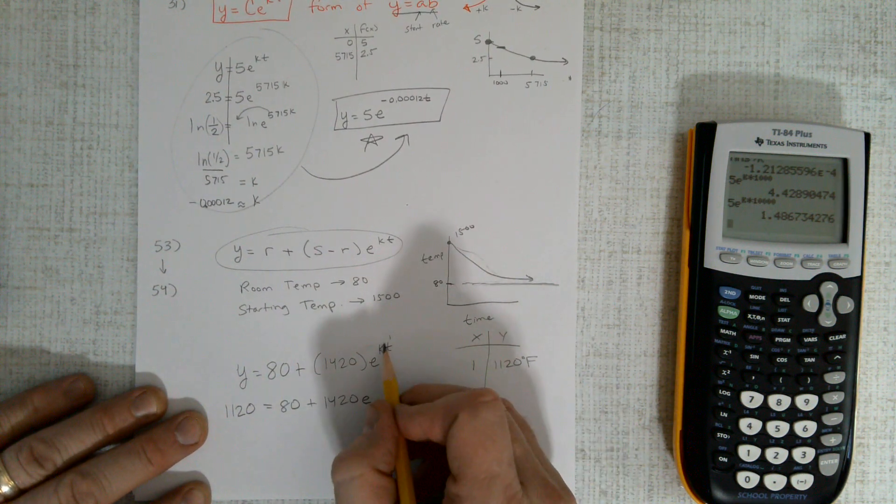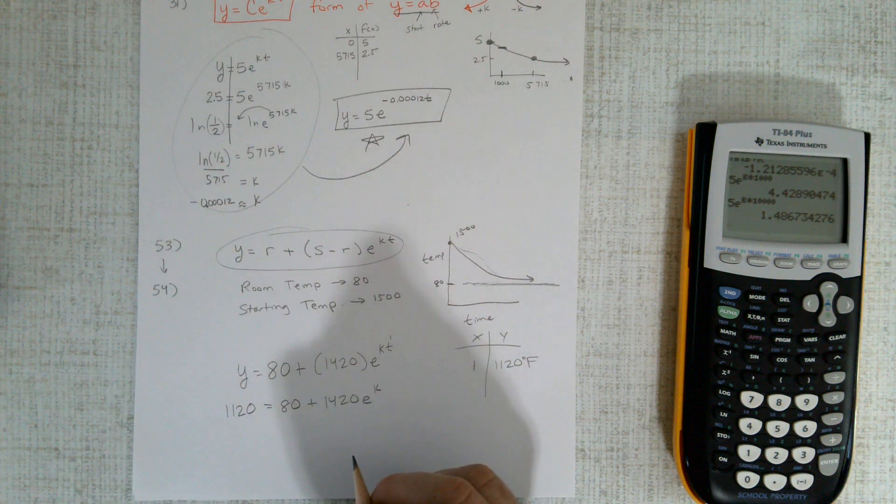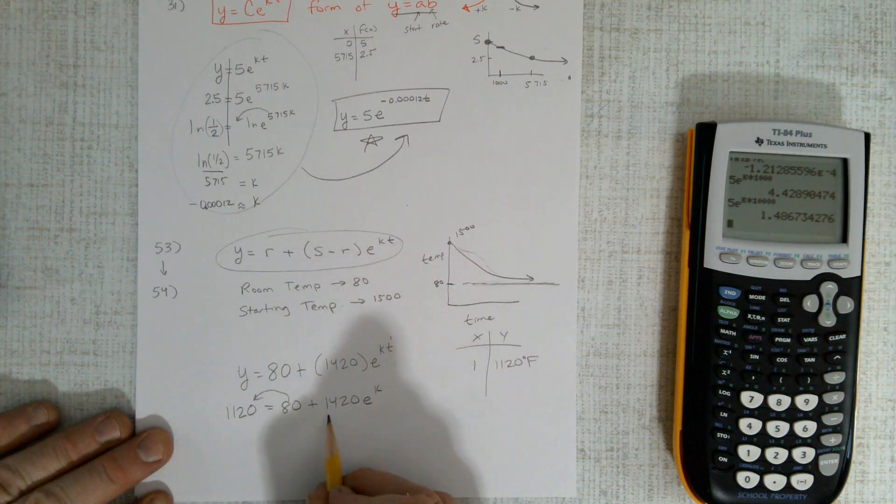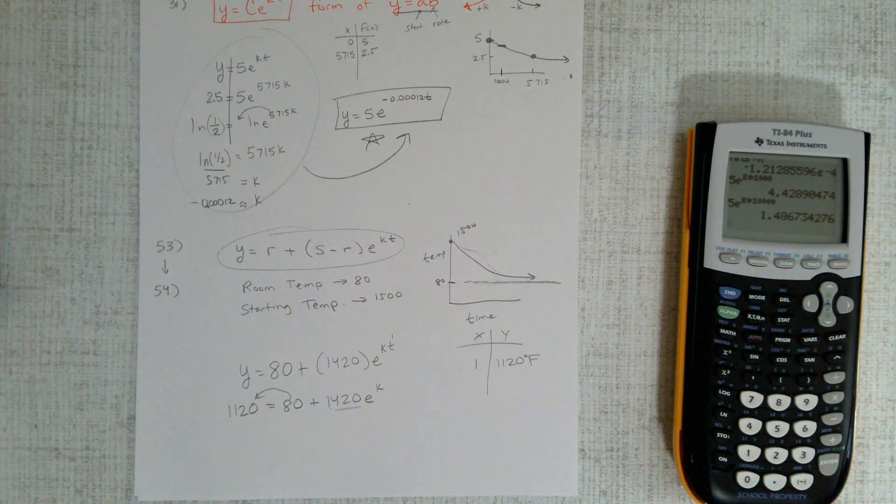So, e to the 1k, or just k power. Now what do we have to do? Simply solve the equation. What can I do? I can subtract this over, divide it by 1420, take the natural log, and I will be at k.